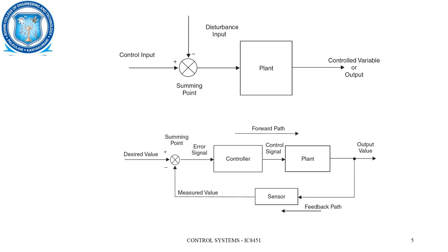Depending upon the control signal, the plant will be updated and the desired response will be generated. In this case, we have both a forward path as well as a feedback path. But in the open loop system, we have only the forward path.